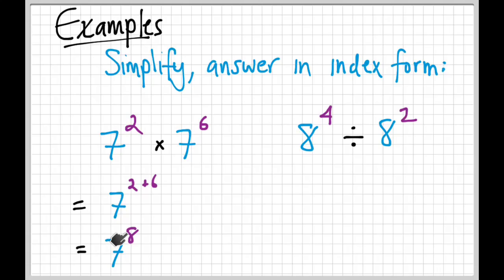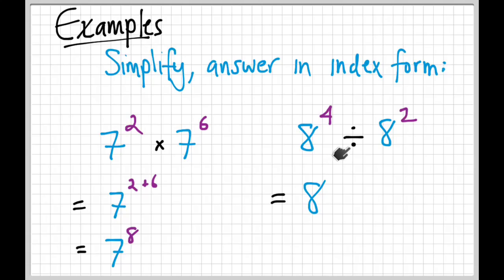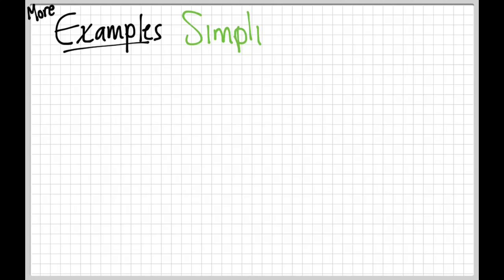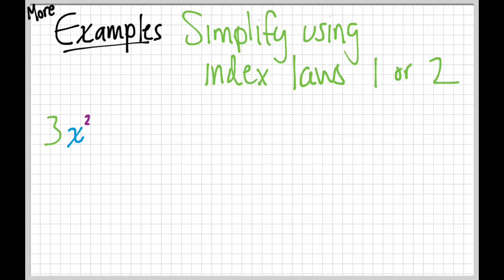You can plug this into your calculator, but using index form is fewer buttons — and knowing these index laws means fewer buttons to type, which means less chance of making a mistake. Now for eight to the fourth divided by eight squared — we use index law two. The base is eight, and we subtract the powers: four minus two is two. So the answer is eight squared, which is 64.